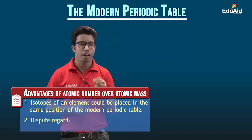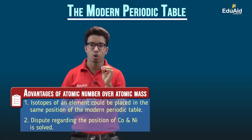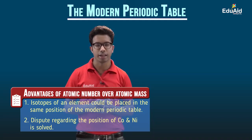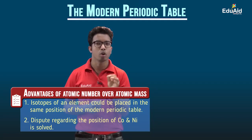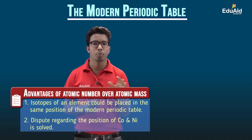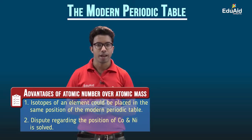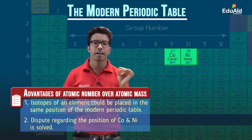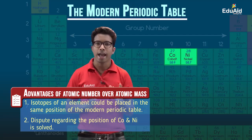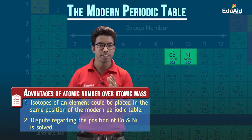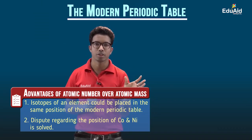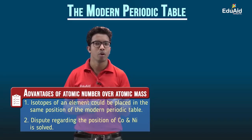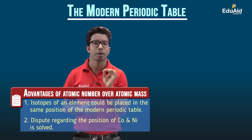Another limitation of Mendeleev's periodic table was regarding the position of cobalt and nickel. The atomic mass of cobalt is higher than nickel, so it should be placed after nickel, but Mendeleev placed cobalt before nickel based on their properties. When the classification is based on atomic number, it is observed that the atomic number of cobalt is less than nickel. So moving from cobalt to nickel, the atomic number increases by one, which matches both the law and the properties.